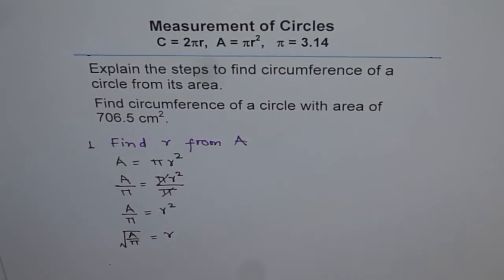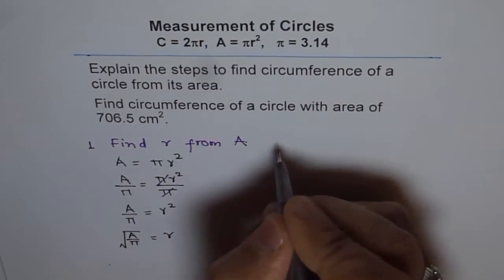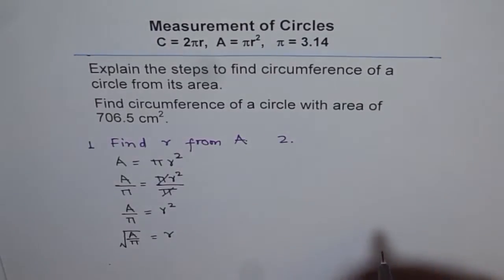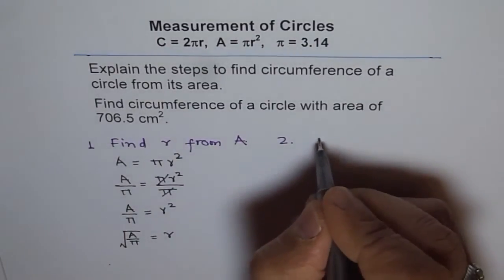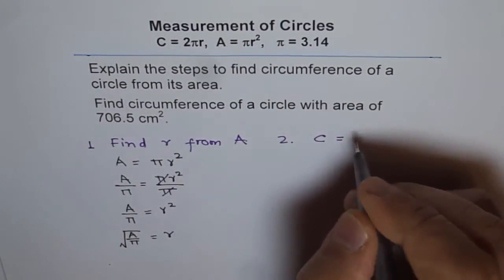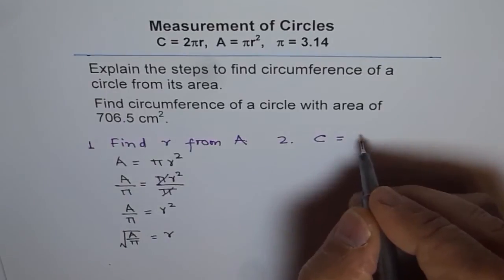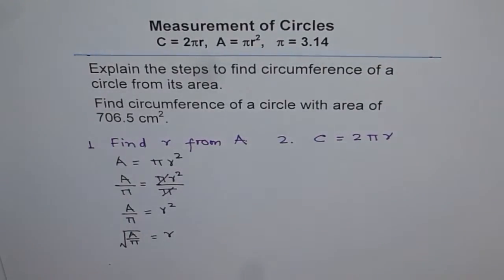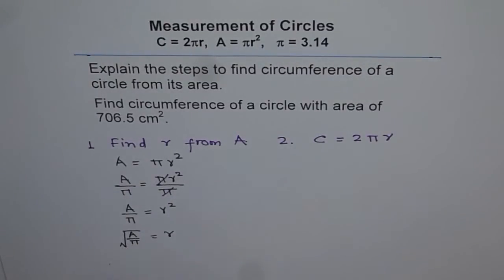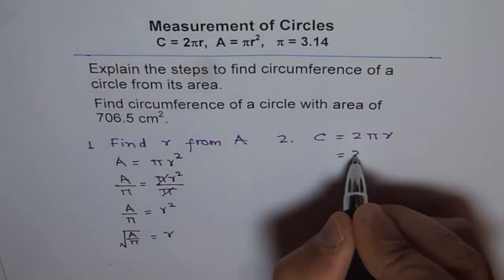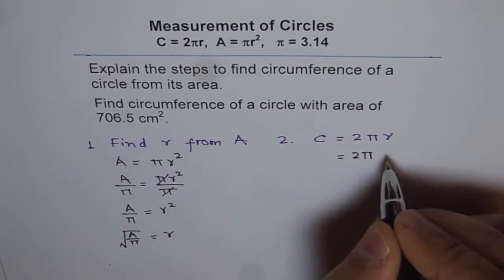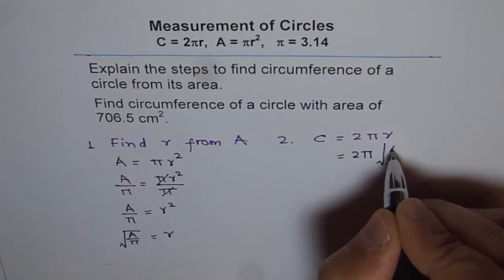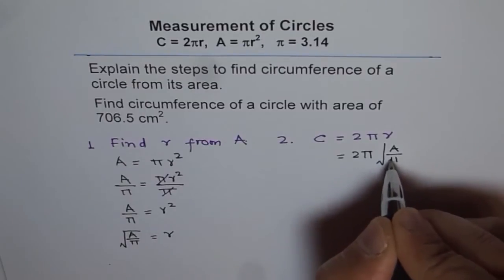Now that you have the value of r, step number 2 is to calculate the circumference. Circumference equals 2πr. We now have r as the square root of A over π, so we can write this as 2 times π times the square root of A divided by π.